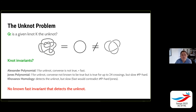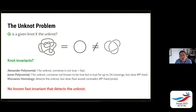The unknot problem is: is a given knot K the unknot? Here's some complicated knot that actually, if you follow it through, is the unknot — it's not equal to the trefoil. You might hope it would be easy to solve using knot invariants. The Alexander polynomial is one for the unknot and can be computed quickly, but the converse is not true. The Jones polynomial is one for the unknot, but the converse is not known to be true — it is true for knots with up to 24 crossings, but it's not really known whether the Jones polynomial decides the unknot.